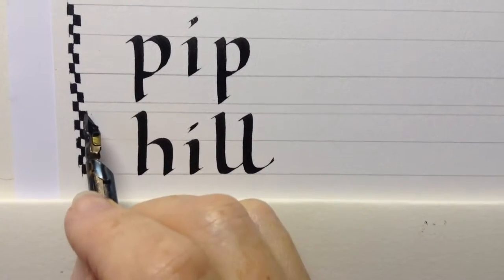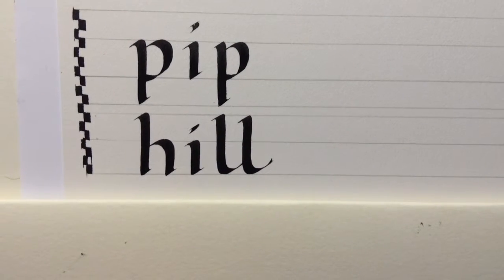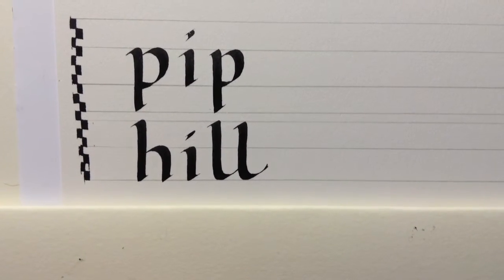And again, the space for the ascenders. So that's three, four, five, six, seven. So the space between the lines should be equivalent to about seven nib widths.